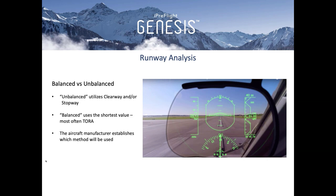I also want to touch briefly on the terms balanced versus unbalanced. In our runway analysis calculation, unbalanced utilizes clearway and stopway — the accelerate-go weight is calculated using clearway, and the accelerate-stop weight takes into account stopway, so both distances and weights would be different. The balanced calculation utilizes the shortest value, most commonly TORA, to determine takeoff weight. Most corporate aircraft use the balanced approach and do not take credit for clearway or stopway.